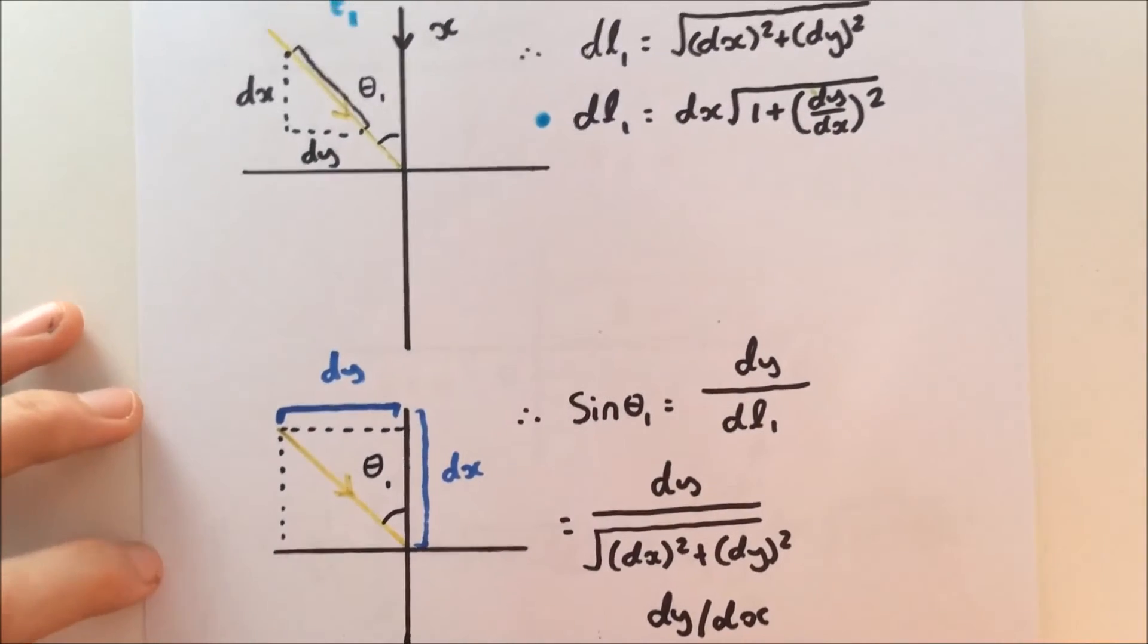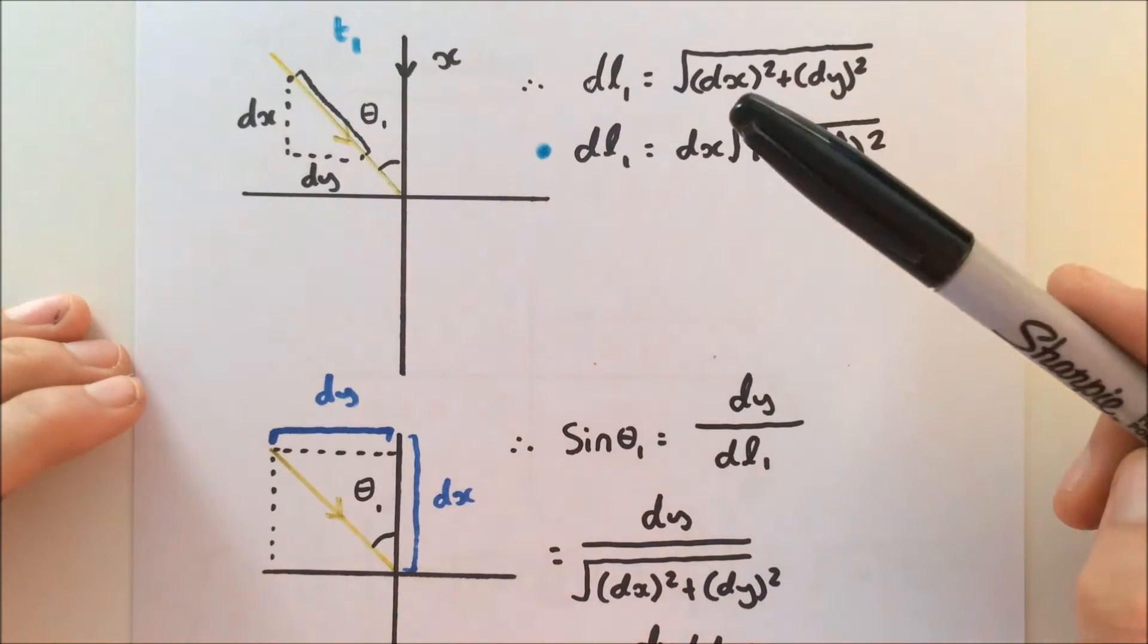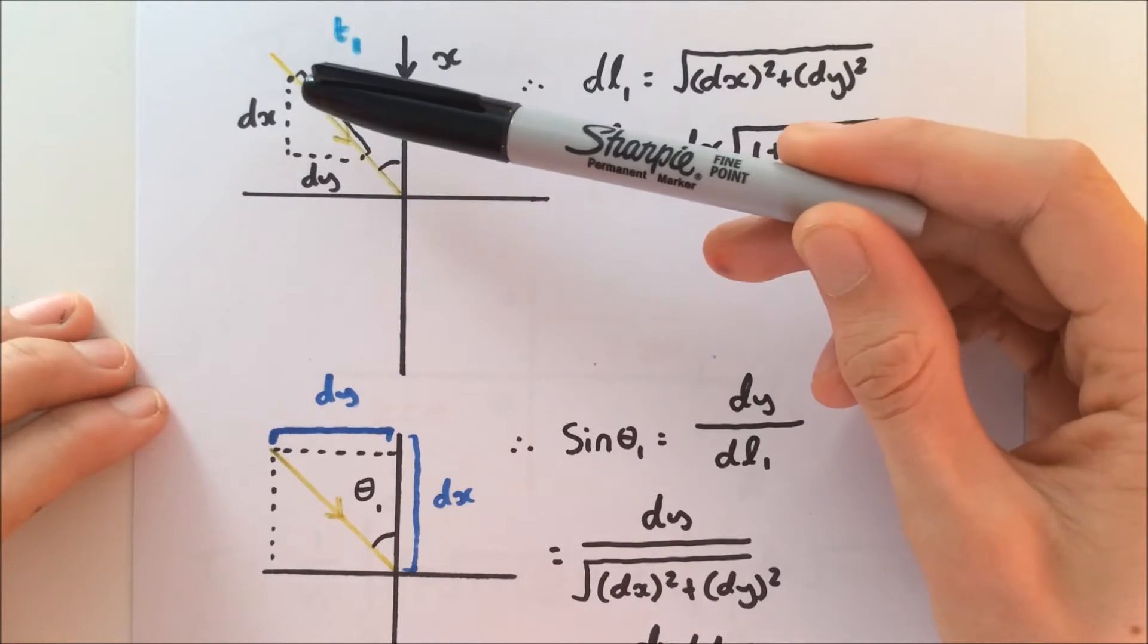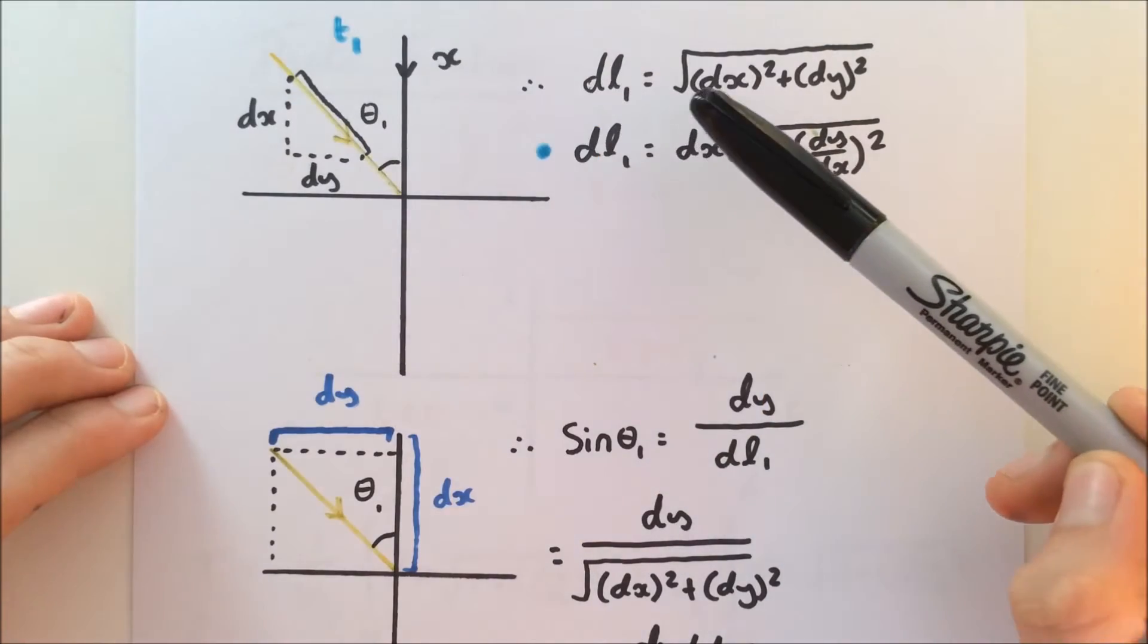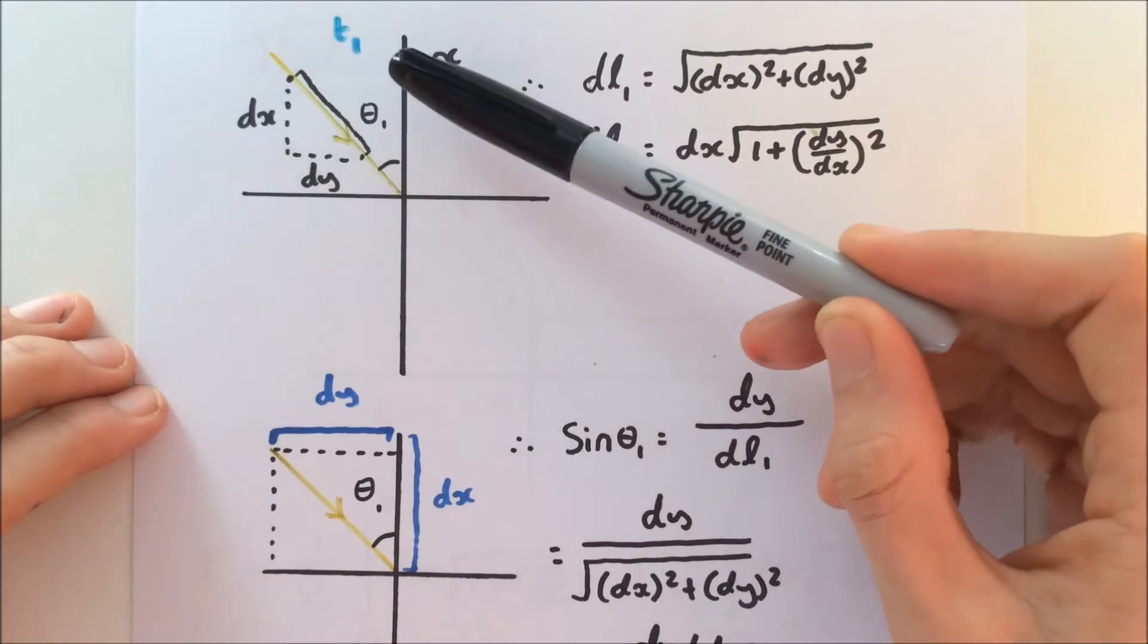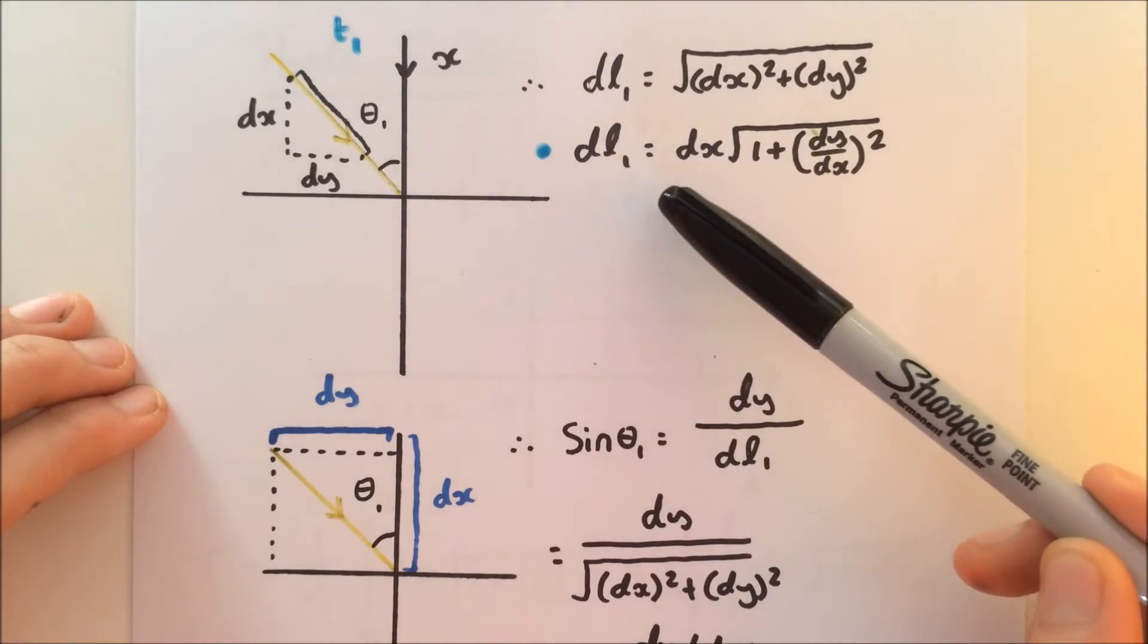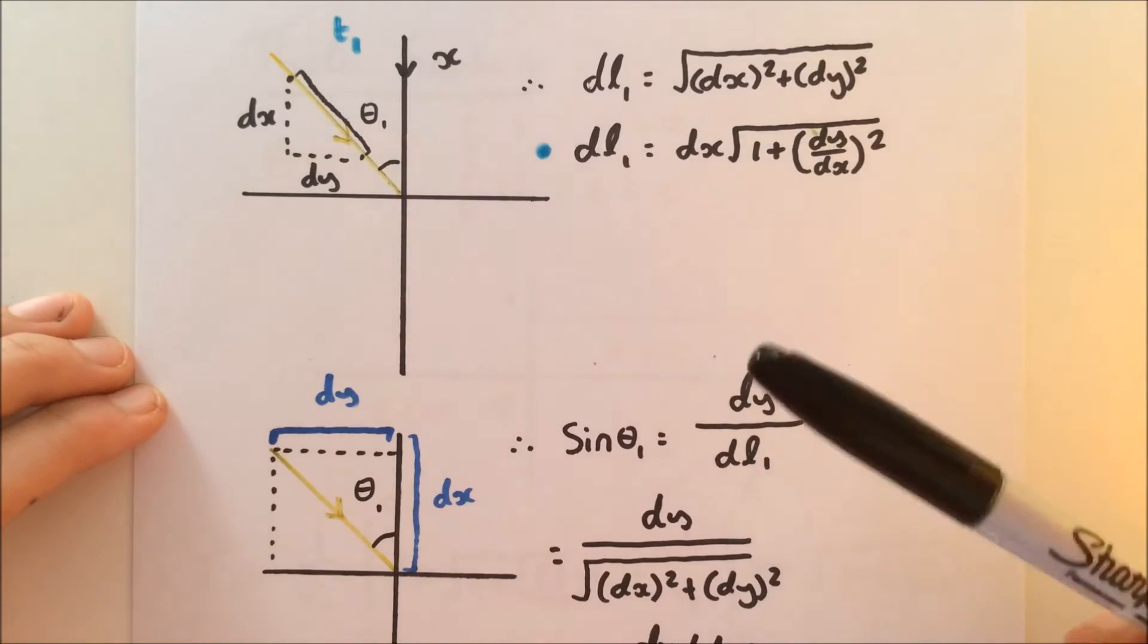So what we can do now is focus on infinitesimal distances. What is DL1? Well, we already established that as a small distance on the path of the light ray. Using Pythagoras theorem, we can say that it's equal to the square root of dx squared plus dy squared. Dx, of course, is an infinitesimal distance on the x axis. Therefore, we can factor out a dx and say DL1 is equal to dx times the square root of 1 plus the derivative of y with respect to x squared.